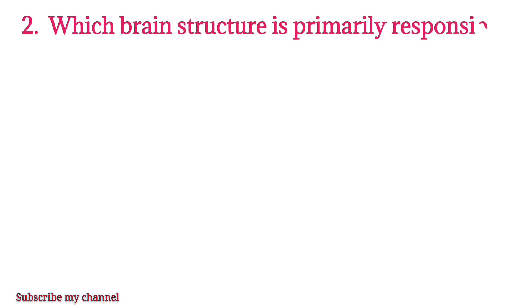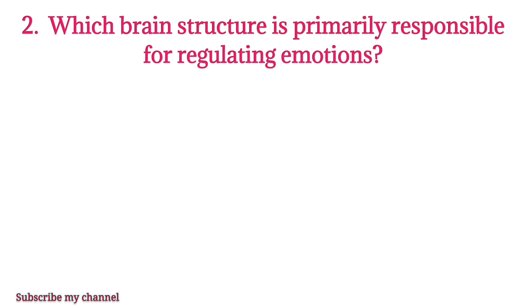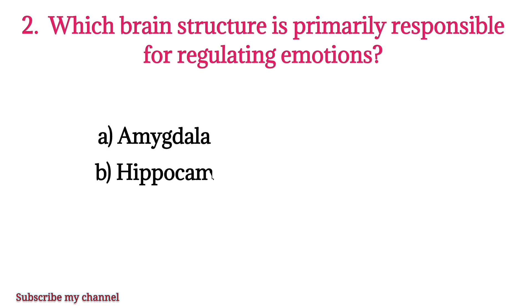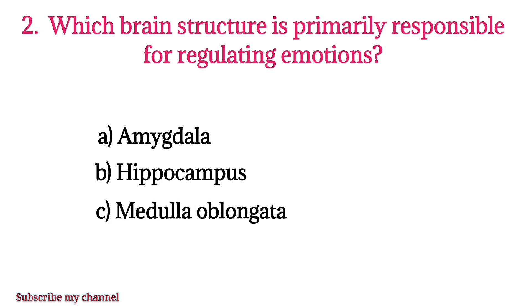MCQ number two: Which brain structure is primarily responsible for regulating emotions? Option A: amygdala, option B: hippocampus, option C: medulla oblongata, option D: thalamus. The right option is option A.